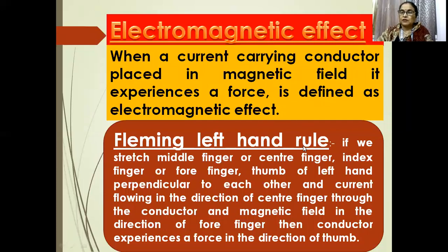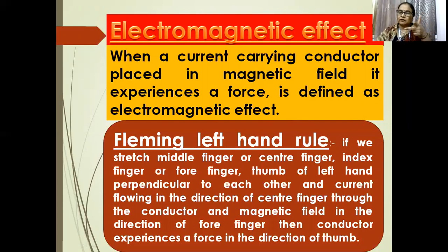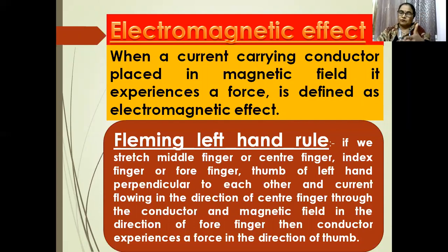The principle of the motor is electromagnetic effect, also known as Fleming's left-hand rule. When a current-carrying conductor is placed in a magnetic field, it experiences a force — this is the electromagnetic effect. If we stretch our middle finger, index finger, and thumb of the left hand perpendicular to each other, and current flows in the direction of the middle finger, field in the direction of the forefinger, then the thrust and force are in the direction of the thumb.